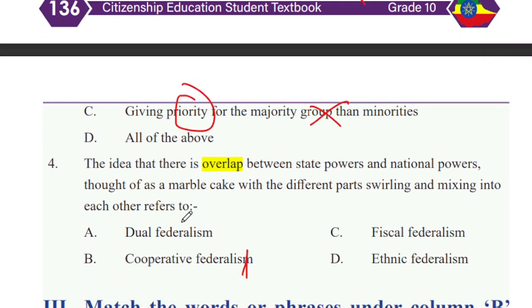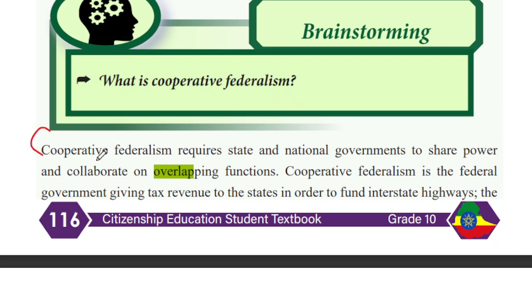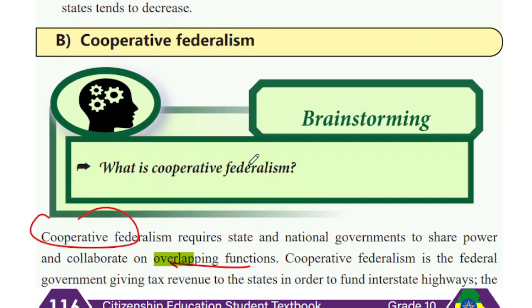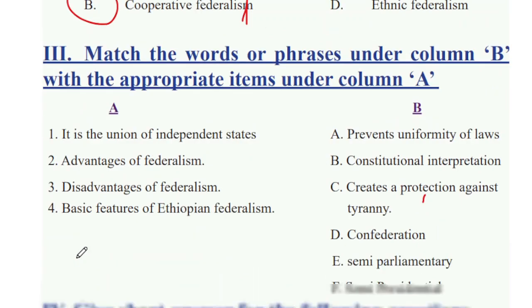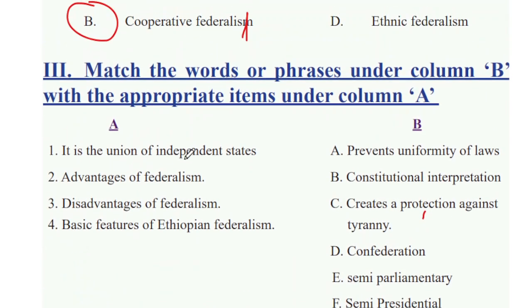The idea that there is overlap between the state's power and national power, with different parts mixing into each other, is referred to as dual federalism. Cooperative federalism, by contrast, requires that there is a national sharing of power and collaborative or overlapping functions between different levels of government.